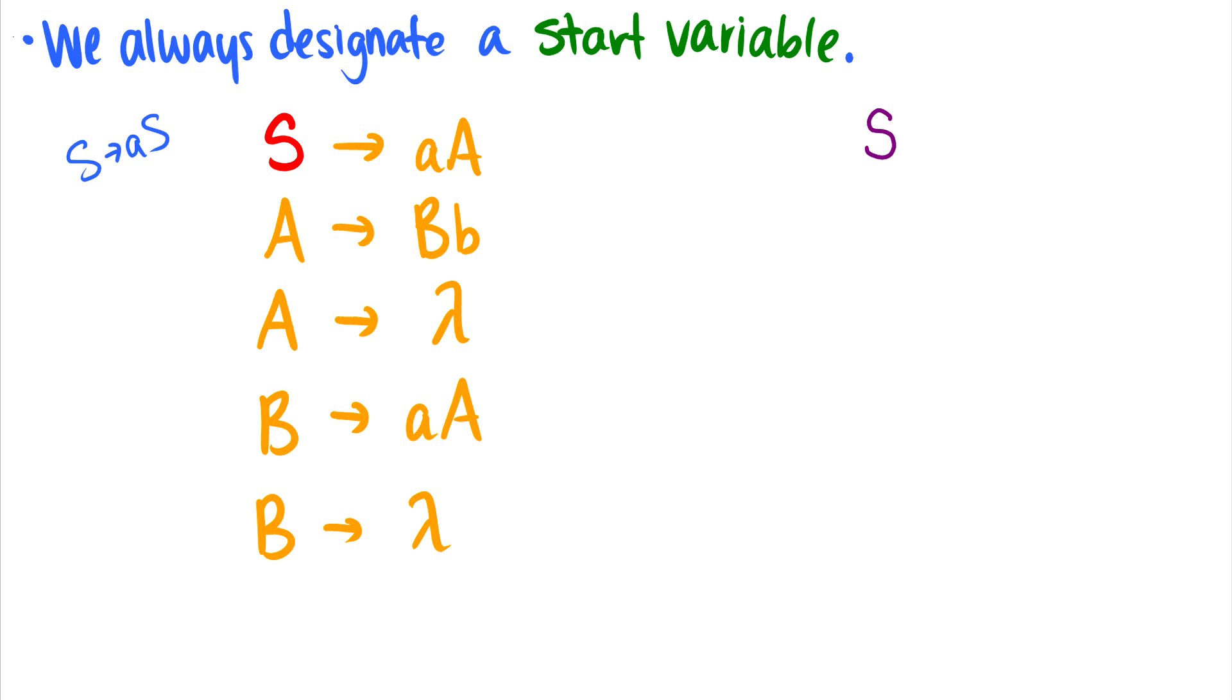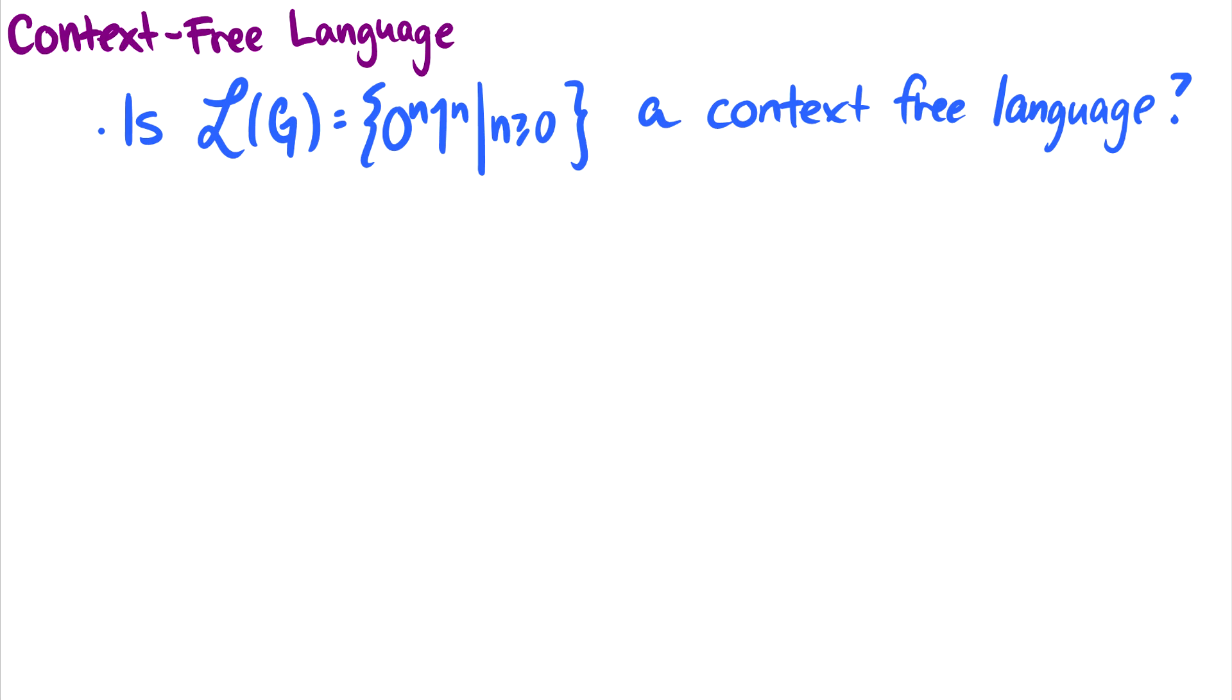For the most part, we won't ever state it. We'll just assume that S is the start variable. So here's a question: Is the language of G equal to 0^n 1^n, where n is greater or equal to 0, a context-free language?